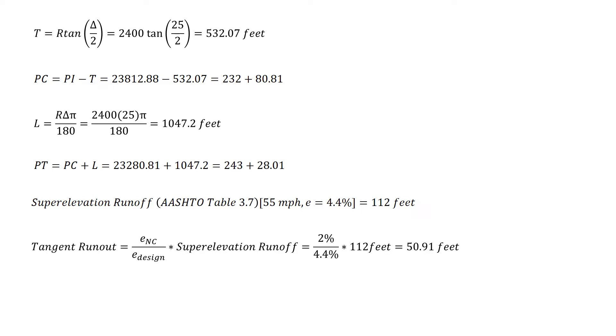From that we can calculate the tangent runout, which is the normal crown rate divided by the super elevation rate multiplied by the super elevation runoff. So 2% divided by 4.4% multiplied by 112 feet gives us a tangent runout of 50.91 feet.